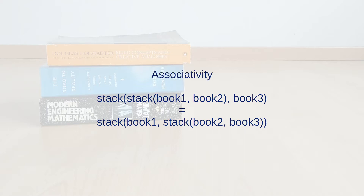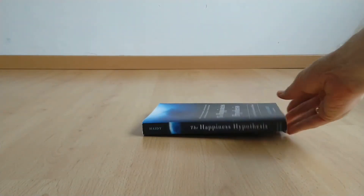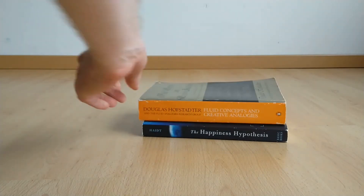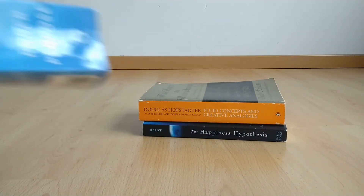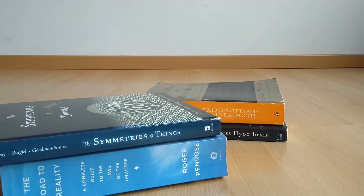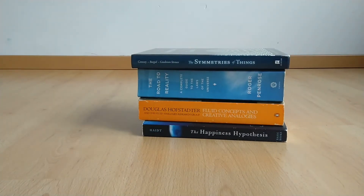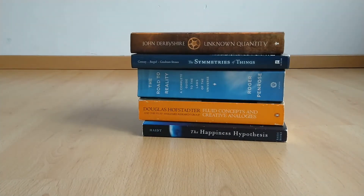So there are two different orders in which you can apply two binary operations, and if we want our stacking operation to work correctly we have to make sure that these different ways of stacking always give us the same result. This key property is known as associativity. In order to make our ternary operation work we demand that our binary operation must be associative. You can now easily extend the stacking operation to four, five, and more piles of books — you always simply stack them two by two — and no matter the order you always get the same result thanks to the fact that stacking is associative.